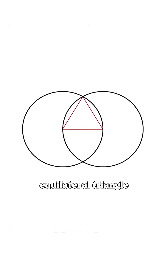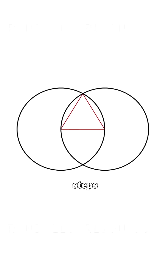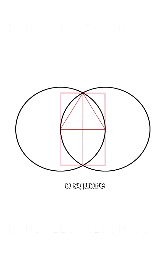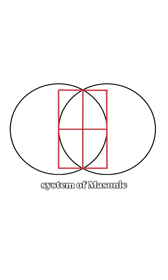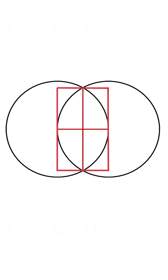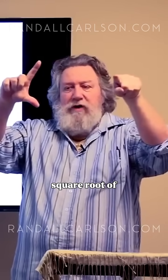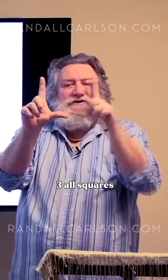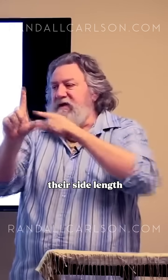It starts with the creation of the equilateral triangle, and then from there, a couple of additional simple steps allow you to create a square. That leads you into the ad quadratum system of Masonic geometry, which means 'of the square.' As the vesica is based upon a length-to-width ratio of the square root of 3, all squares have a diagonal-to-side-length ratio of the square root of 2.